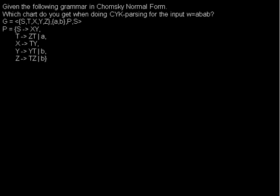We want to use CYK parsing to check if the grammar can produce the input word ABAB. We have the grammar in Chomsky Normal Form, which means on the left side we have a variable that can be derived to two variables on the right side, or to one terminal, with no empty productions or anything else like that. So we can use simple CYK parsing.